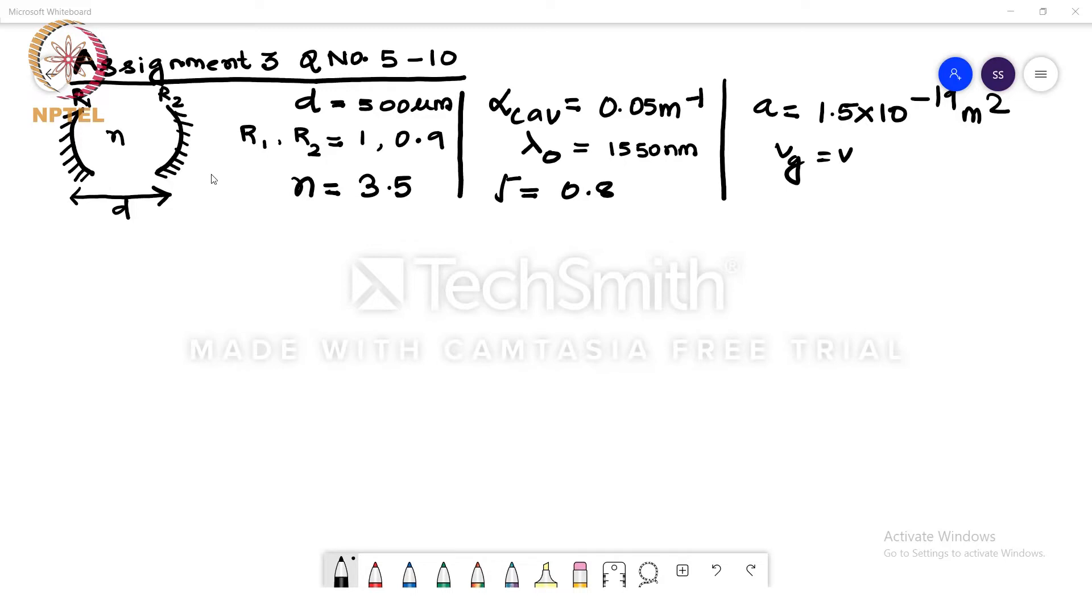We are given a laser cavity with cavity length d, the r1, r2 reflectivities are given to us, we know the refractive index n of the medium inside, and the internal cavity loss of the system is given.